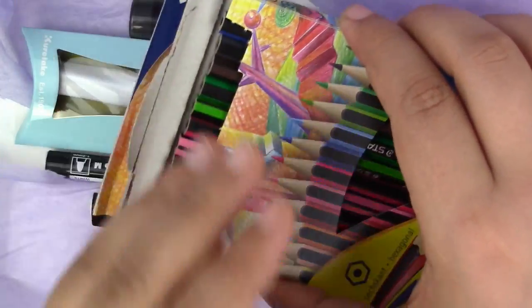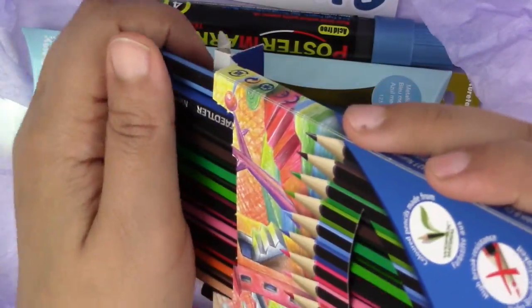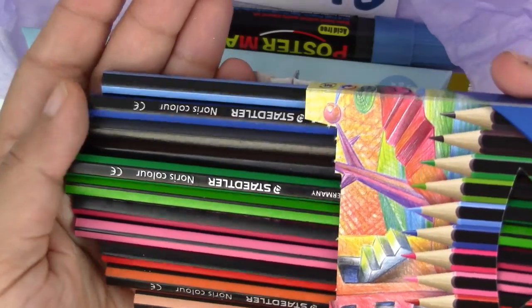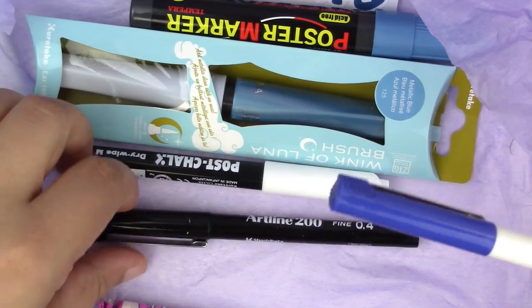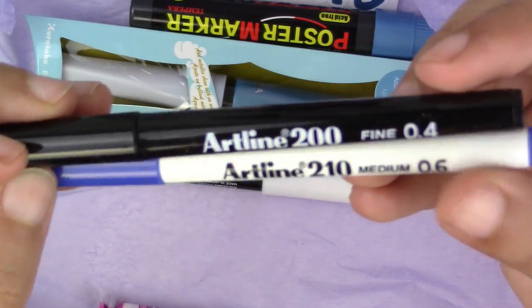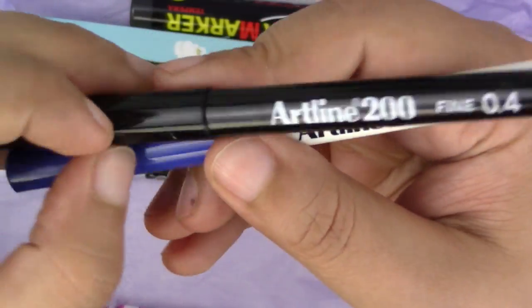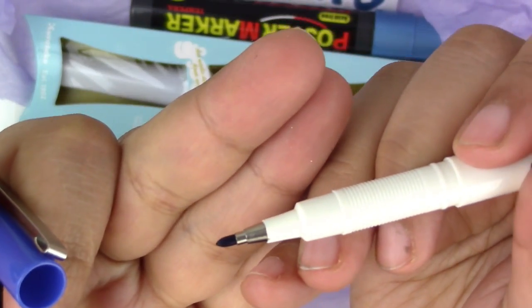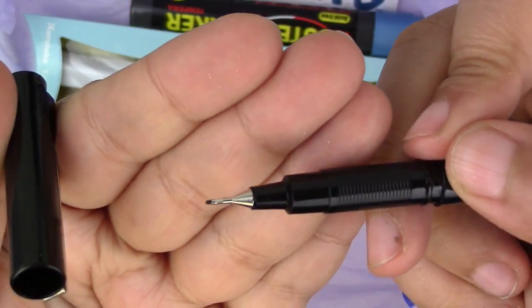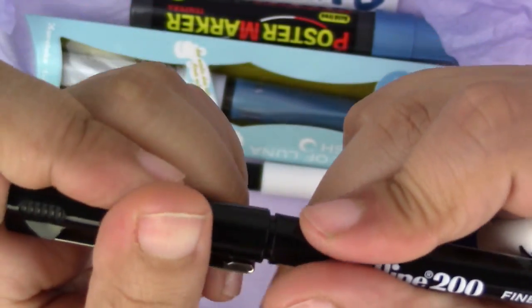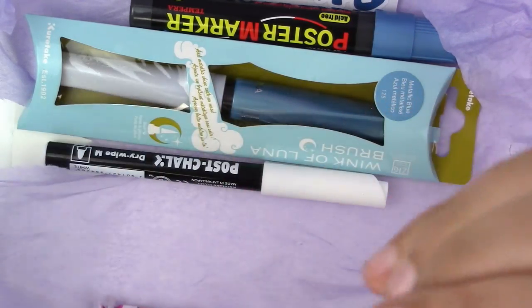We have these guys here, really pretty colors. We're gonna test them out later on together. Then we have the Artline, this is a 0.6 which is pretty thick. Then we have this one, a 0.4 which is all right. I like to work with fine liners.